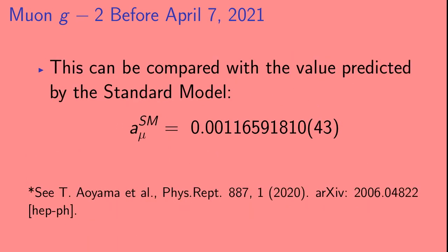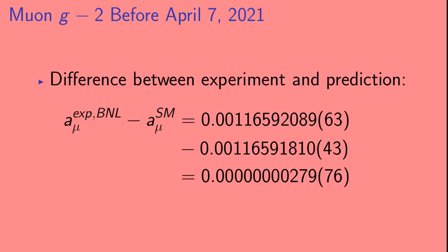Now this can also be compared with the value predicted in the standard model, shown here with its uncertainty. The Brookhaven result is a little bit above the standard model prediction. If you take the difference between the Brookhaven result and the standard model prediction, you get 3.7 sigma.